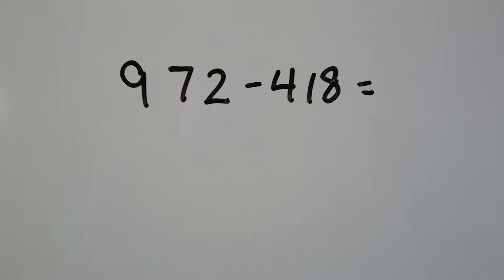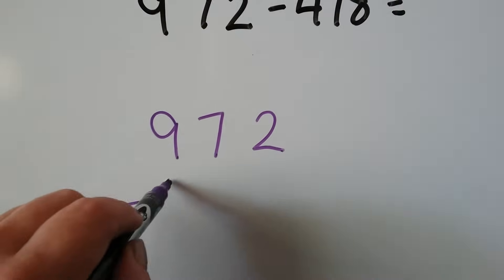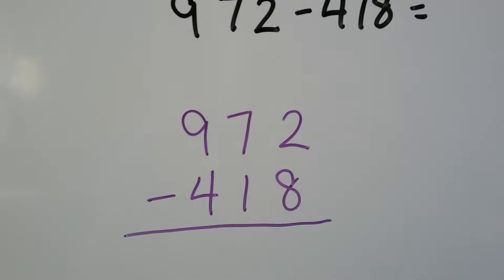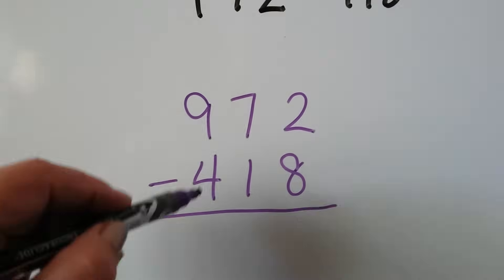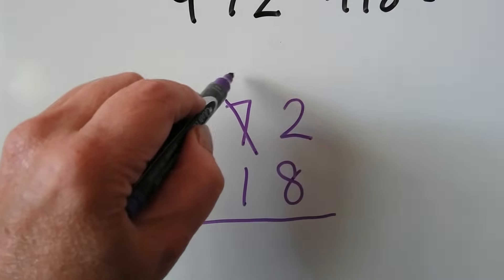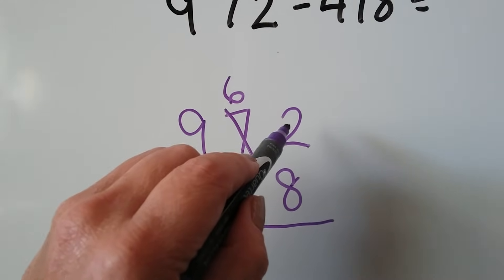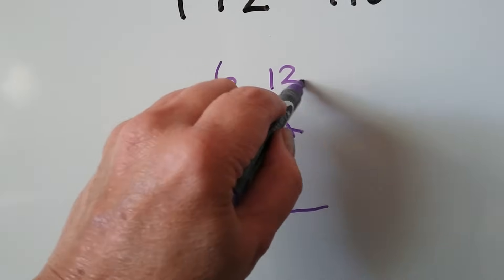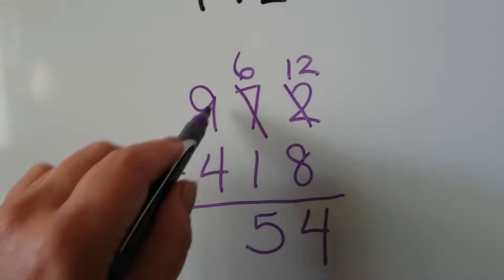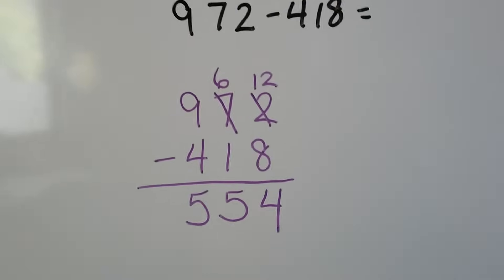Now we have 972 minus 418 in vertical form. Make sure columns are neat so we don't subtract the wrong numbers. In the ones place, 2 minus 8 — we can't, so we ask the 7 tens for one. It becomes 6 tens, and we now have 12 ones. 12 minus 8 is 4, 6 minus 1 is 5, and 9 minus 4 is 5. We get 554.